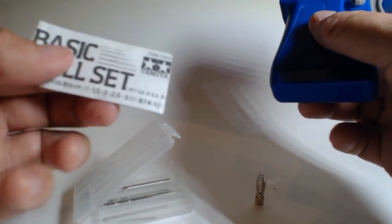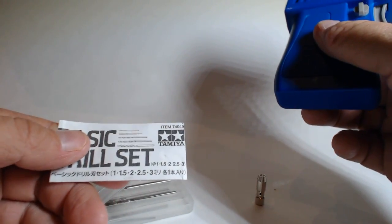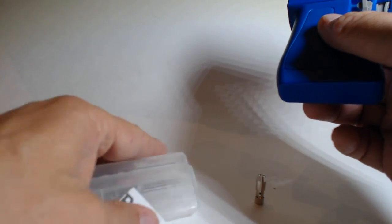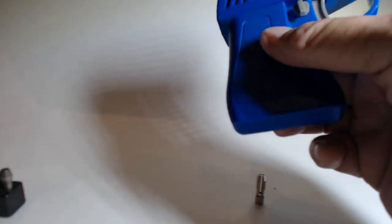There's a little thing here, you get a basic drill set: 1mm, 1.5, 2, 2.5 and 3mm, so it gives you the drill bits you need to use for magnetizing and doing conversions on your models.